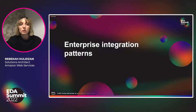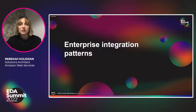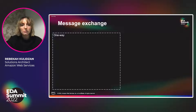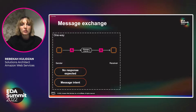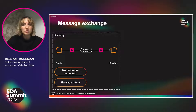The first integration pattern I'm going to talk to is messaging exchange. These are general use, not just for microservices, but I'll discuss them in that context. The first messaging exchange is quite simple: a sender and receiver. It immediately shows you that messages are decoupled. There's an expectation that there's no response. And you distinguish messages by intent — a command message, document message or transfer, or event message or notification.